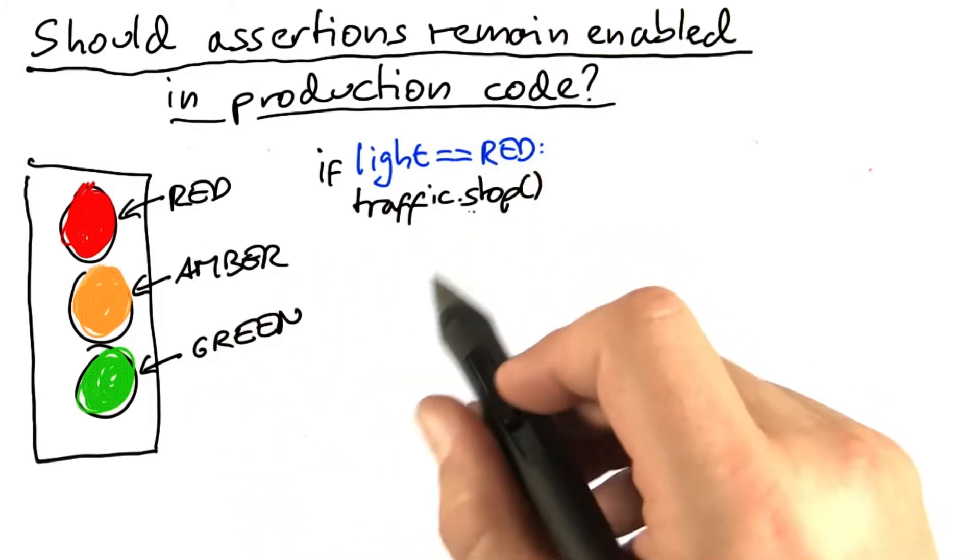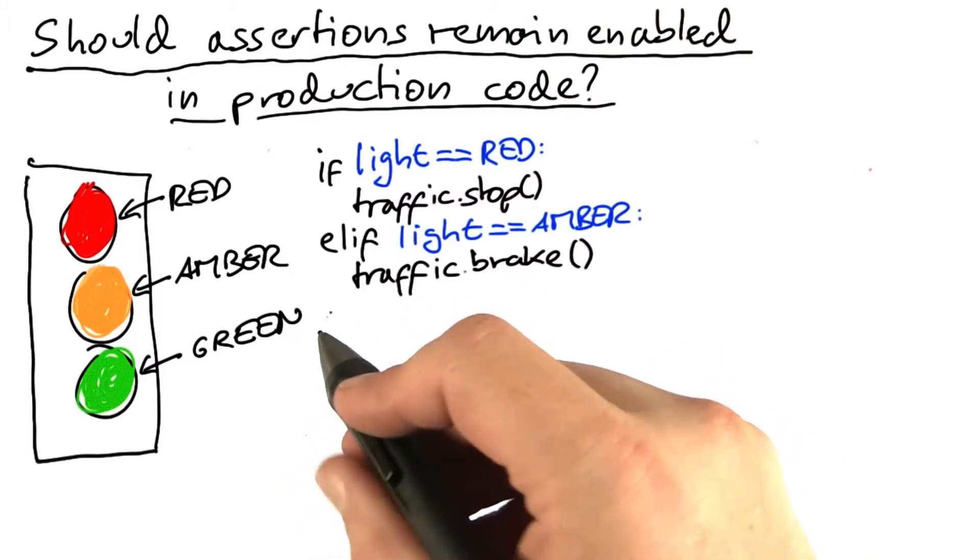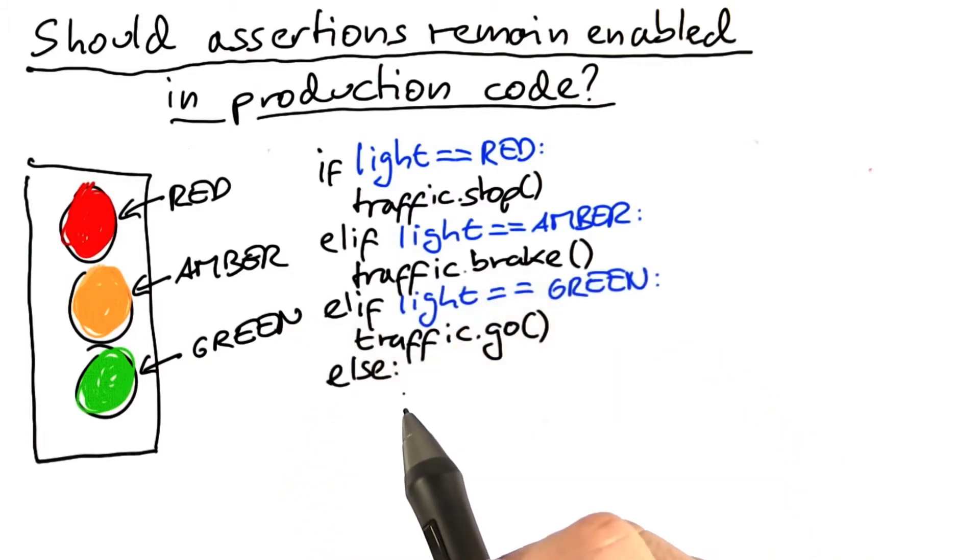So if the light is red, then the traffic should stop. If the light is amber, then the traffic should prepare to stop. And if the light is green, then the traffic should go.